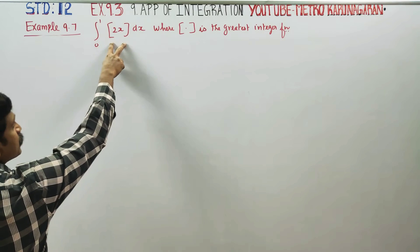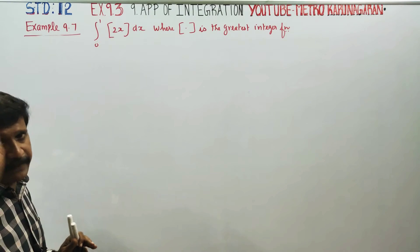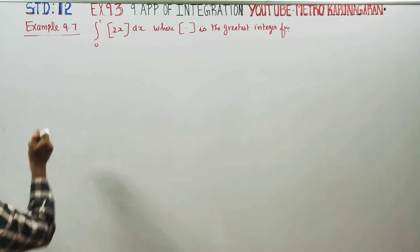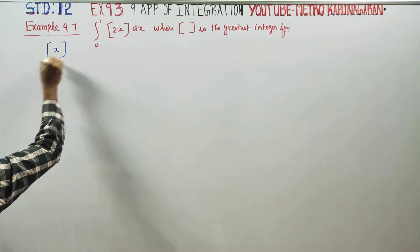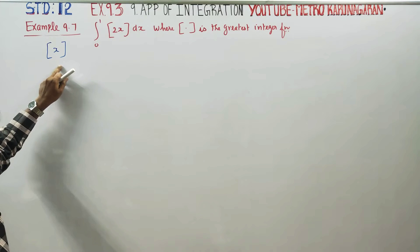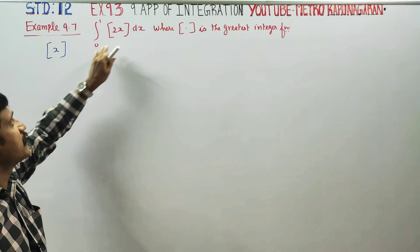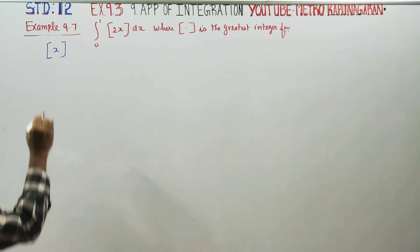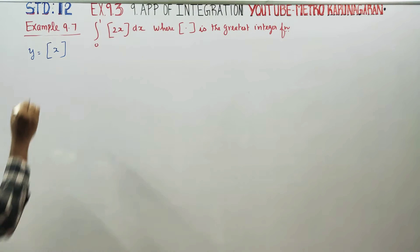I will go to the greatest integer function of 2x. We will talk about the greatest integer function of 2x. If you know the greatest integer function of x, you can easily do 2x. You can see the function y is equal to the greatest integer function.